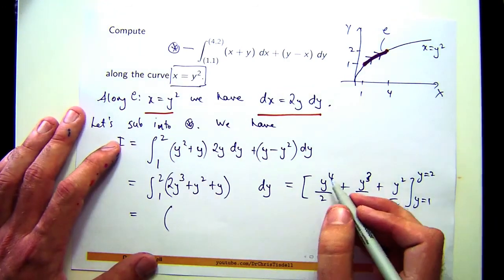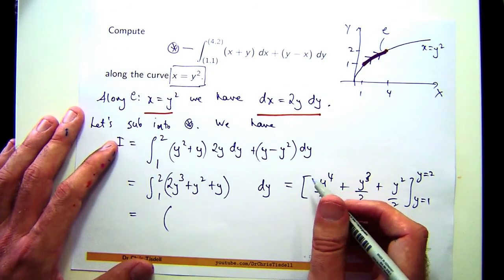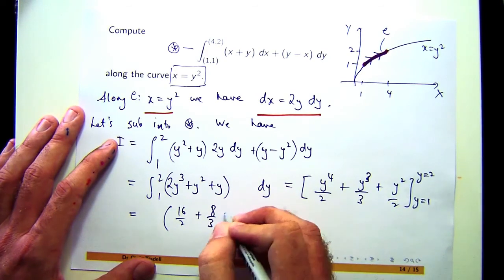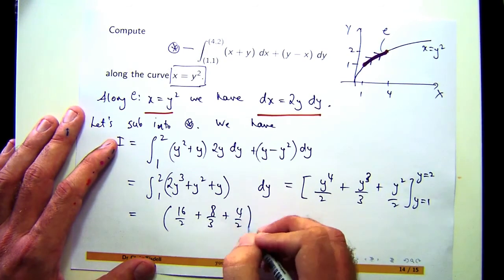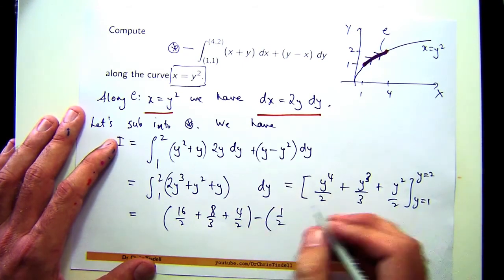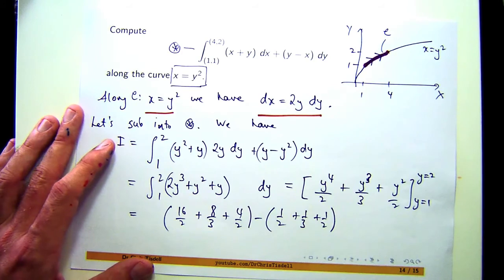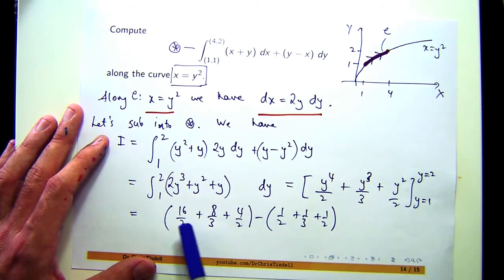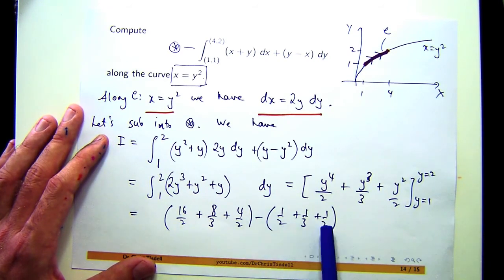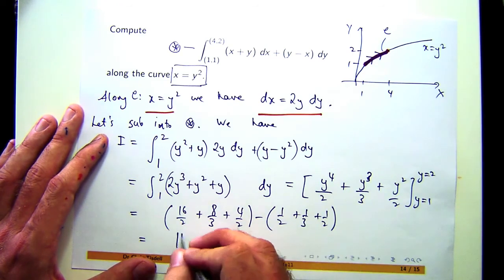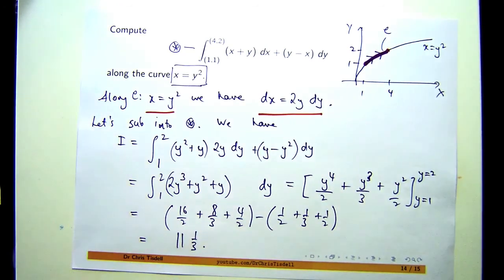So if you plug in the first value, you're going to get something like 16 over 2 plus 8 over 3 plus 4 over 2, minus 1 half plus 1 third plus 1 half. So this is going to be 8. You're going to get a negative 1 from that. And if you simplify it, you'll get this.